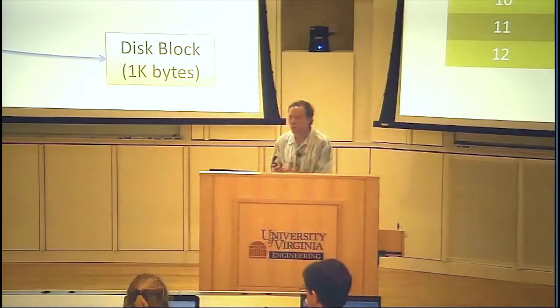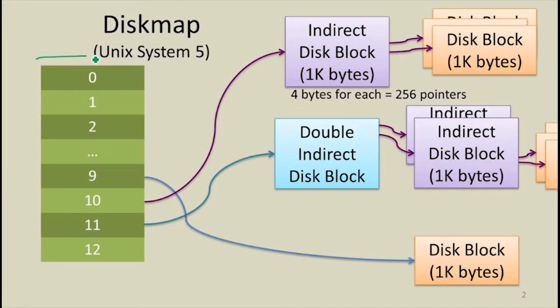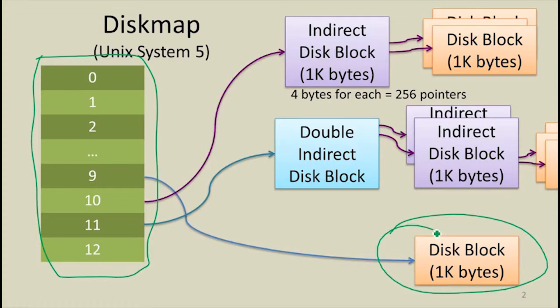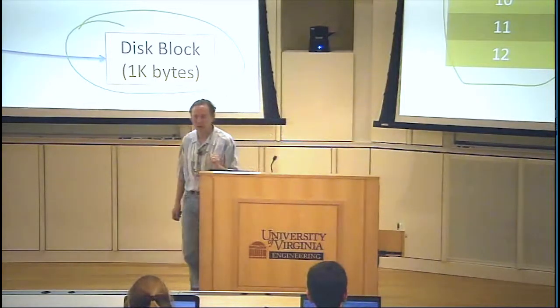This is a recap of what we looked at last class. So this is Unix System 5. We're storing a map for a file within an inode. We've got a disk map. It has pointers to blocks on the disk. The first ten of these point to a single block, and then the later one can point to an indirect block to give us more file storage, and it will take longer to reach those files.